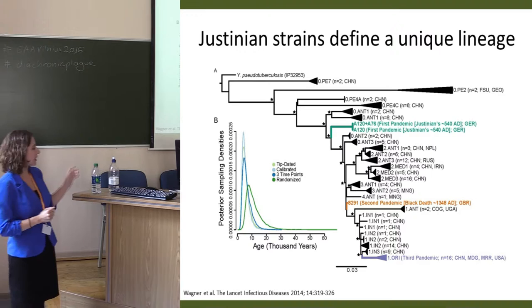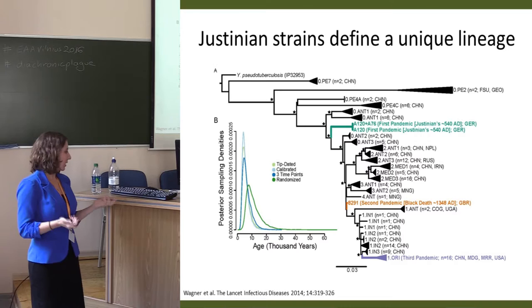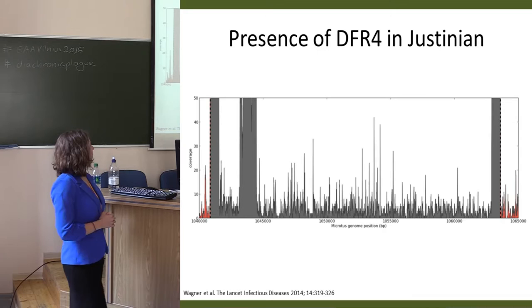This was important at the time because people were suggesting that earlier pandemics of plague couldn't possibly have been Yersinia pestis. Now it has been demonstrated very clearly that it is, and that it did arise much earlier than the Justinian plague.